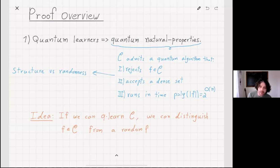The idea is that if we can quantum learn C, we can show that we can distinguish functions in the class from a random function.